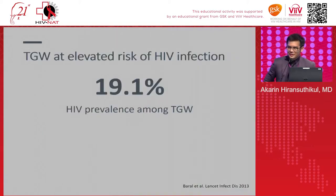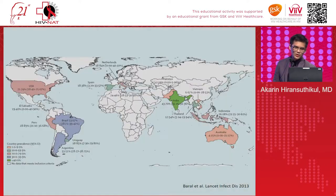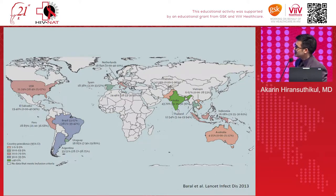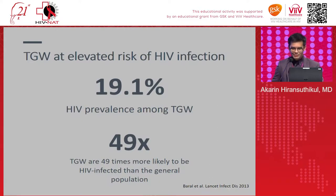A brief background on transgender women: this population is at elevated risk for HIV infection. The HIV prevalence among transgender women is 19.1% overall — in the US it's 20%, Vietnam around 6%, and Thailand around 12%. Transgender women are 49 times more likely to be HIV infected than the general population.